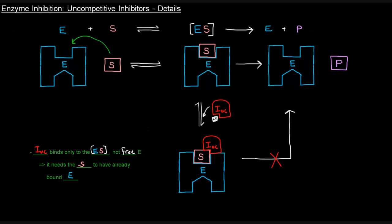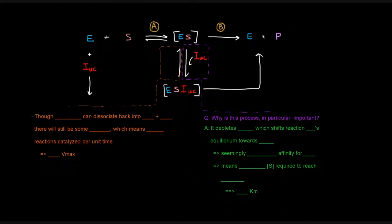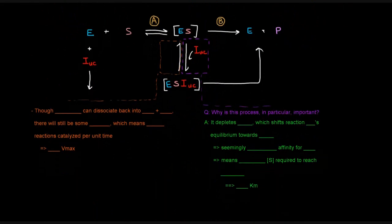That's the idea with uncompetitive inhibitors as far as the pictures go. The enzyme has to bind the substrate and form the enzyme-substrate complex before the uncompetitive inhibitor can come in. If you just have free enzyme and uncompetitive inhibitor, that's not going to bind or do anything. Once you have the enzyme-substrate complex, the uncompetitive inhibitor can come in and form the enzyme-substrate-inhibitor complex, which cannot progress towards enzyme and product.